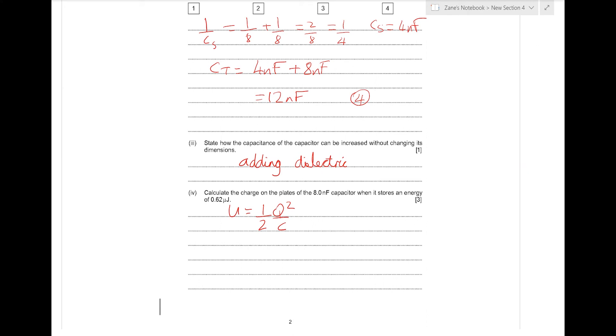Once we've got this relationship, to find the charge, it's going to be 2UC and square rooted. So square root of 2 times 0.62 microjoules times 8 nF. Typing that into your calculator, we end up with 9.96 times 10 to the minus 8 coulombs.